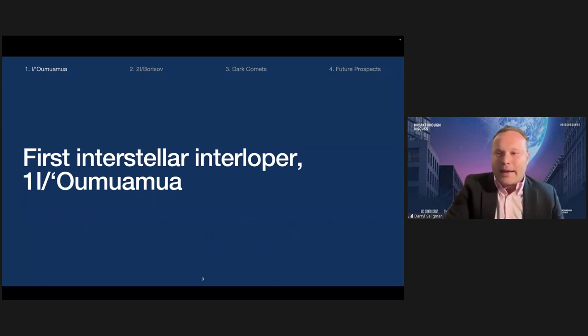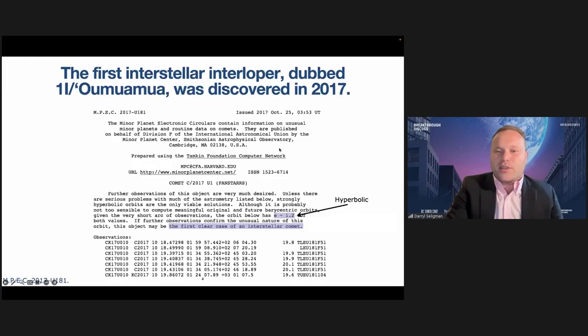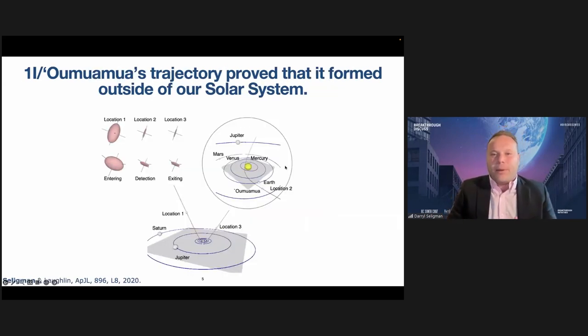The story really starts back in 2017, when the first interstellar interloper, 'Oumuamua, was discovered. This is the minor planet electronic circular that announced the discovery. You can see in the fine print, the eccentricity is about 1.2, which means that it's a hyperbolic trajectory. They said this could be the first clear case of an interstellar comet. What I'm showing you here is what that hyperbolic trajectory looked like. On the top right, you see a zoom in of 'Oumuamua's trajectory in red. That's where 'Oumuamua was discovered when it was closest to Earth. This is what the trajectory looks like when you zoom out into the outer solar system. As opposed to the solar system object trajectories, which are bound and circular, 'Oumuamua's trajectory is hyperbolic. So it came and went, and it's never coming back. That's how we know that it formed outside of the solar system.